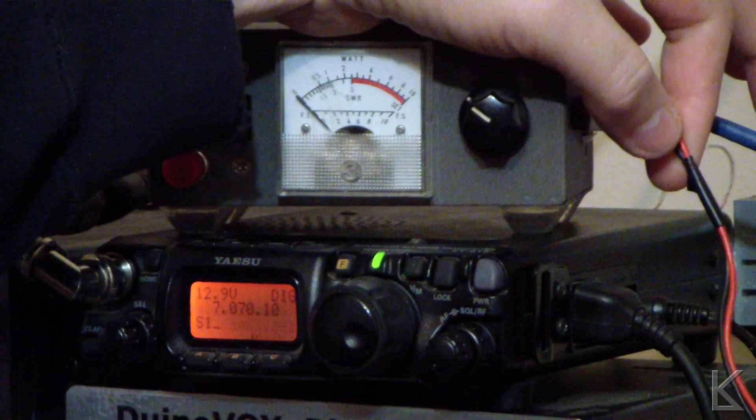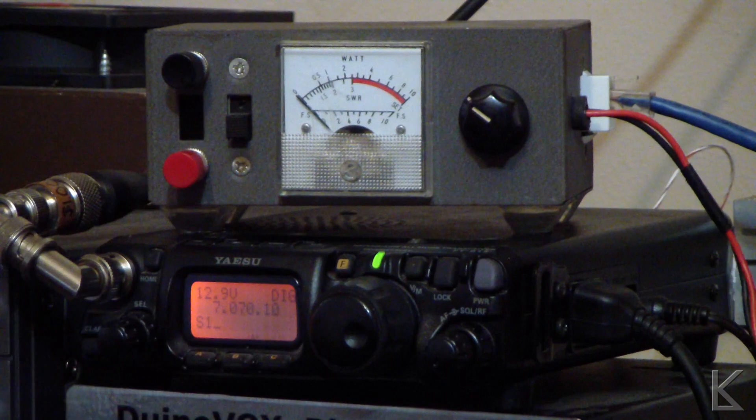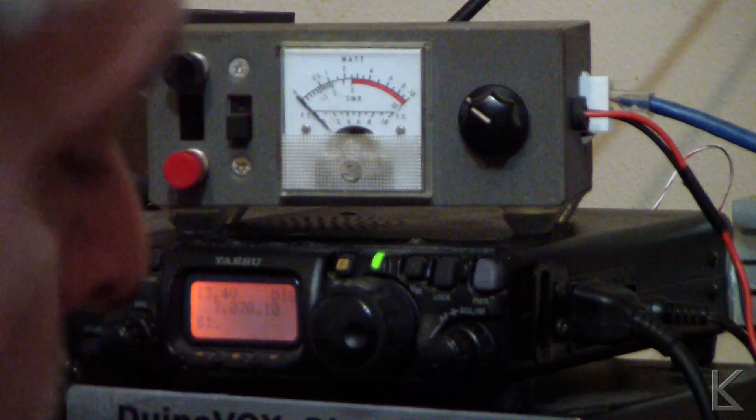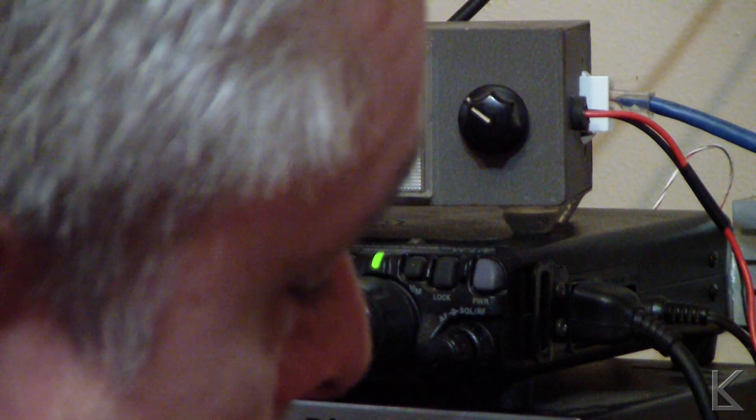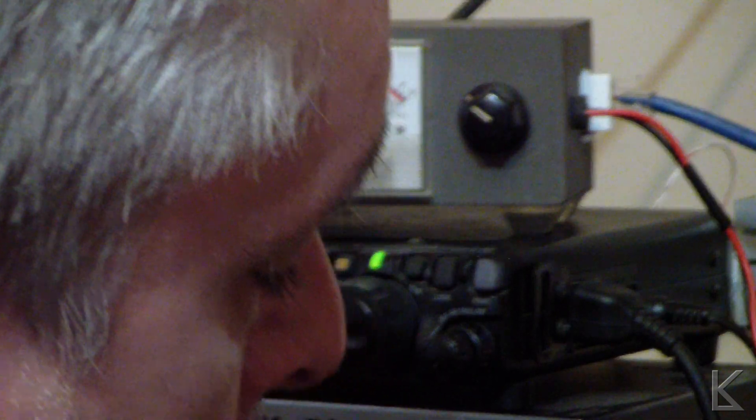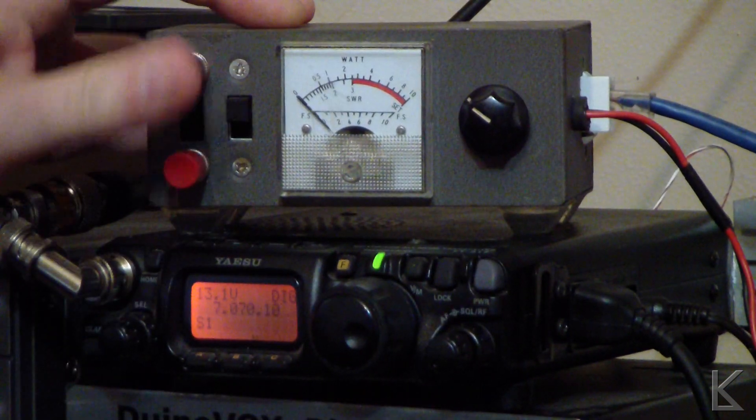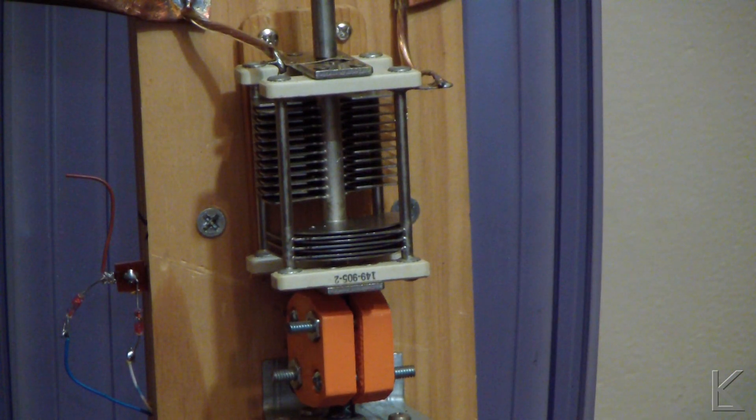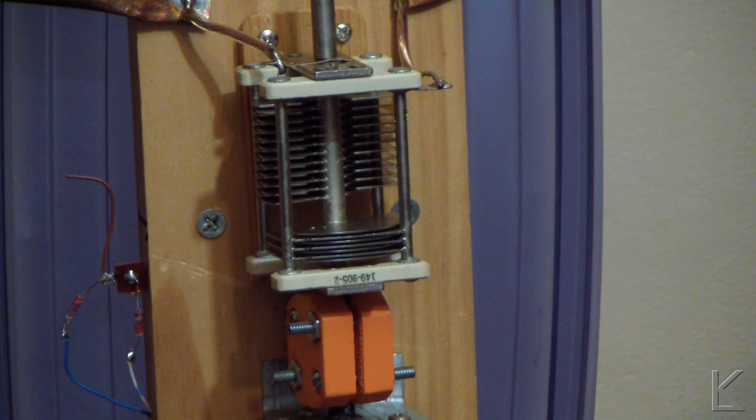So, power for the control box, I have on a couple of alligator clips. And I just clip these on to a battery or to my power source that the radio is running off of. And then, we're ready to operate the loop. Now, if I push one button, you can see it moves in one direction. I push the other button, it moves in the other direction.